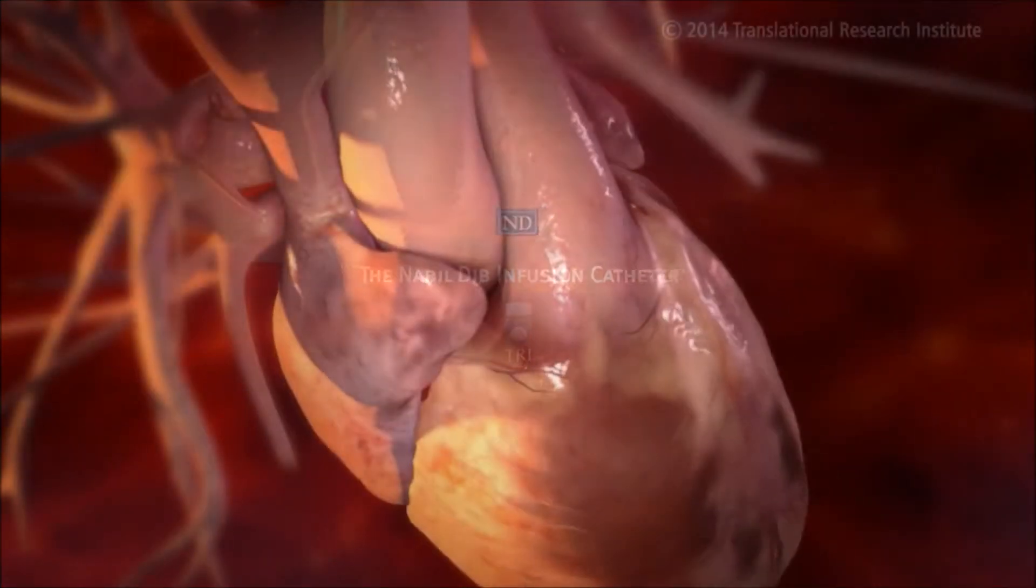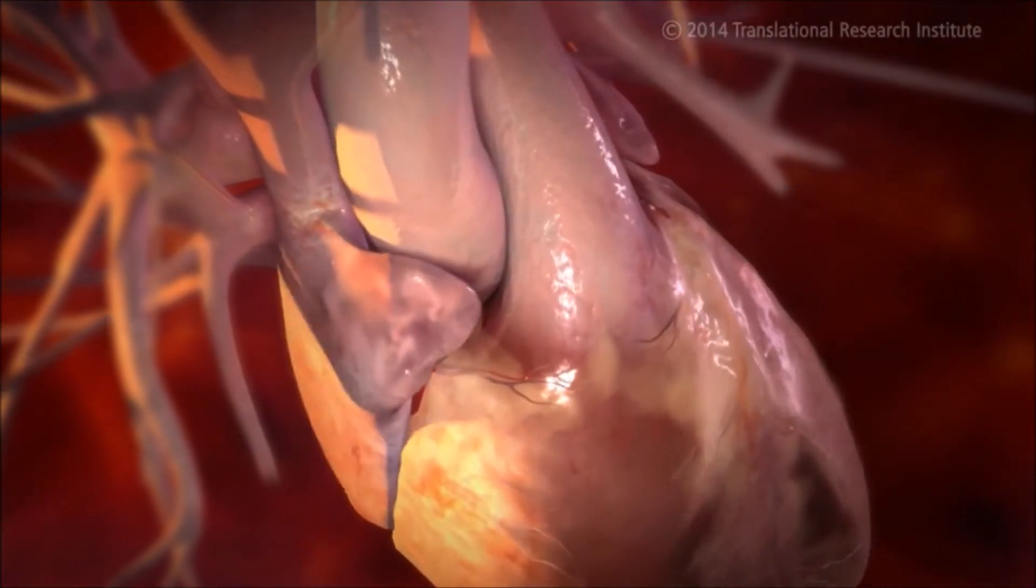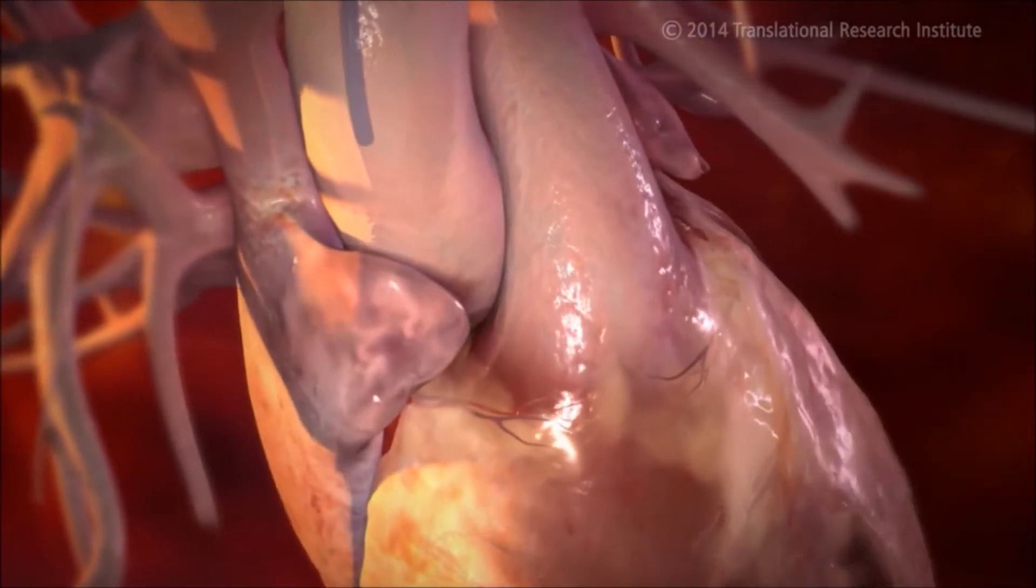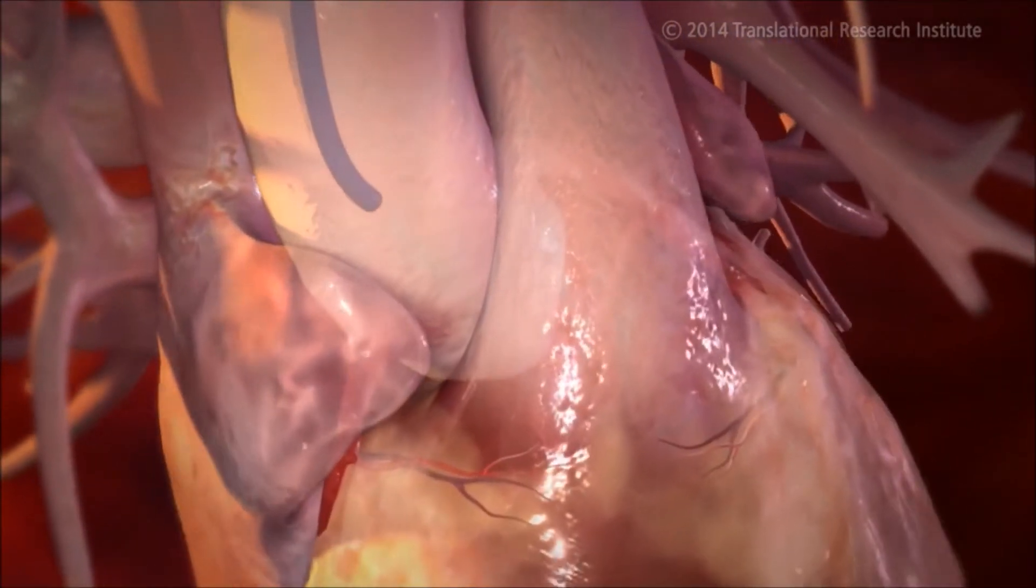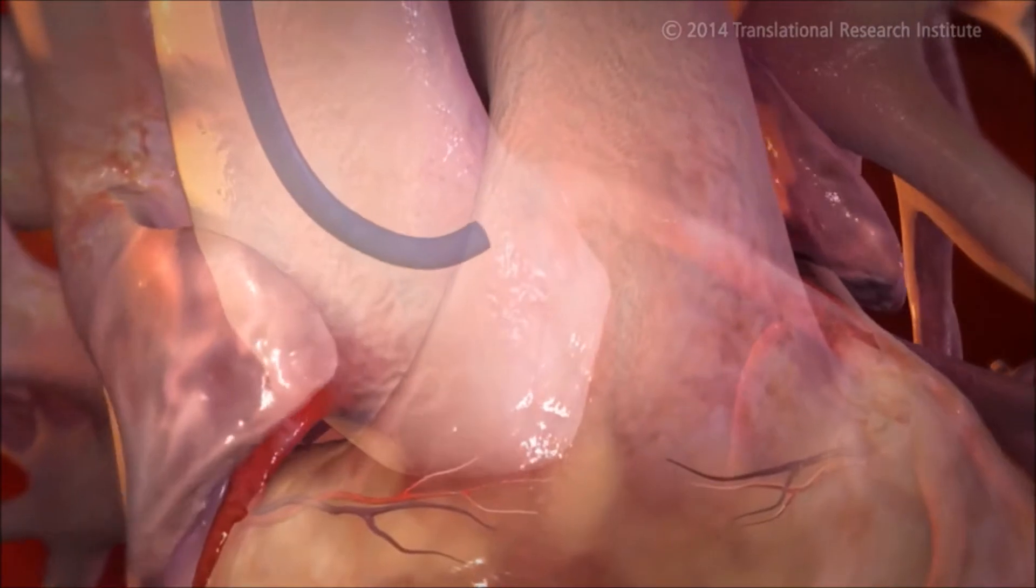A guide catheter is introduced into the femoral artery, navigating through the aorta and across the aortic arch, accessing the main coronary ostium.